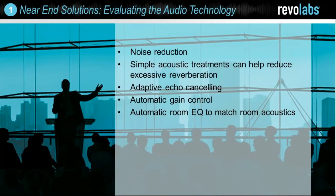Let's talk about criteria for selecting and evaluating the right technologies. Everything needs to have noise reduction — a way to eliminate ambient room noise from the far end, where the technology recognizes that something like HVAC isn't important audio and cancels it out. Acoustic treatments are really important for excessive reverberation, along with echo cancellation and automatic gain control. Automatic gain control means a processor will adjust how sensitive a mic is based on the sound pressure level applied to it. Not everybody is a clear, loud speaker who projects — some are quiet — so AGC allows flexibility while still maintaining good volume to the far end based on who is speaking.